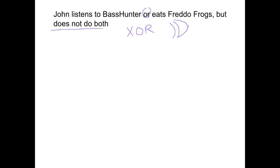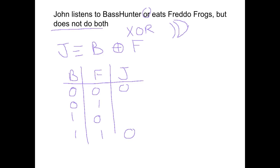So if we've got John is equivalent to Base Hunter, and I think that might be the diagram for it. In an expression, he listens to Base Hunter or he eats Frodo Frogs. So if we have Base Hunter, Frodo Frogs, and John, all combinations, 0, 1, 2, and 3. So an exclusive or says it's false when they're both false. It's false when they're both true, but it is true when they are different.